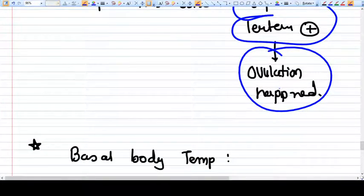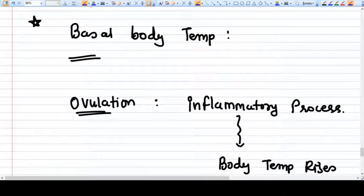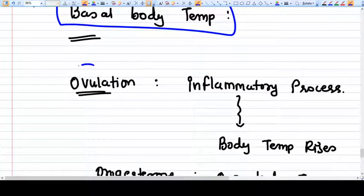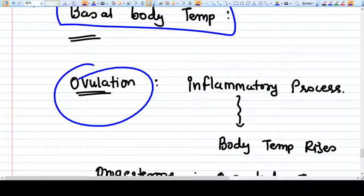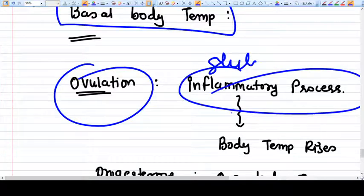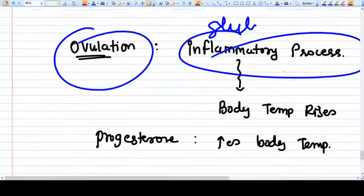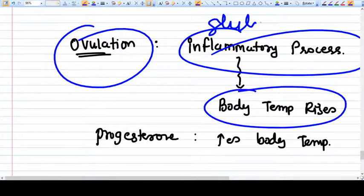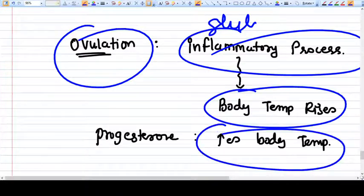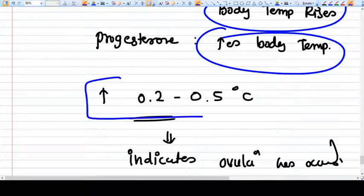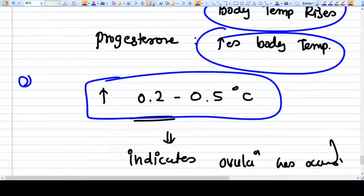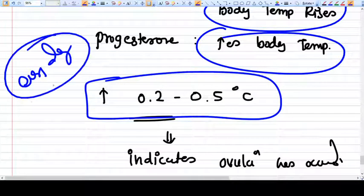Now comes the basal body temperature method. Ovulation itself is a slightly inflammatory process, so pain can be there. Sometimes patients have ovulation pain also. So with this inflammation, body temperature rises. Progesterone is also considered to rise the body temperature.